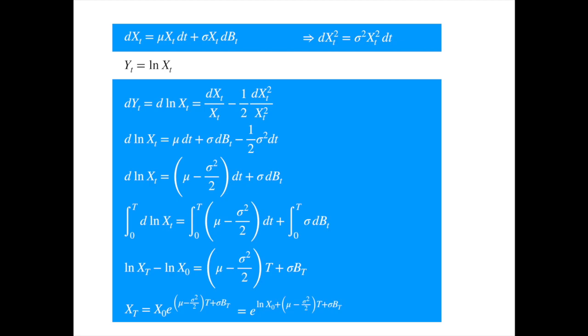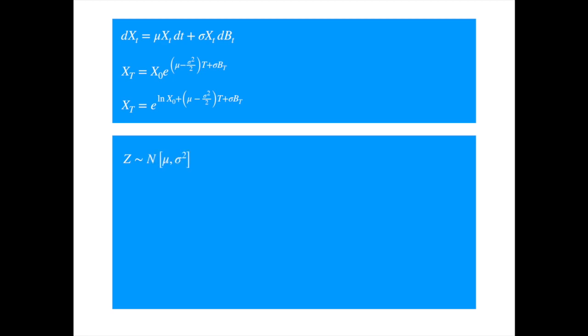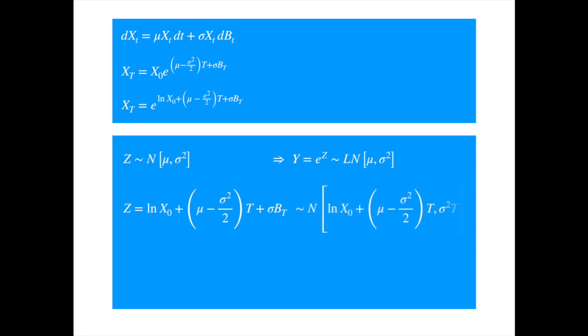We now characterize its probability distribution. We reproduce the SDE and its solution in both forms first. Recall that if z is normally distributed with some given mean and variance, then the exponential of z is log-normally distributed with the same mean and variance. An easy way to remember this is to say that y is log-normal because its log is normal. Now the expression in the exponent of our geometric Brownian motion is very much like the arithmetic Brownian solution we saw in the previous presentation, with an extra term, so we know that it is normally distributed with a similar mean and variance.